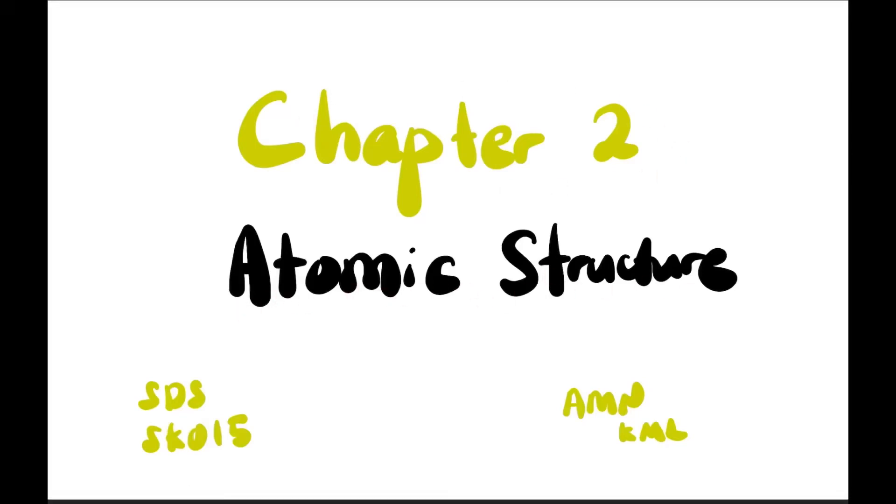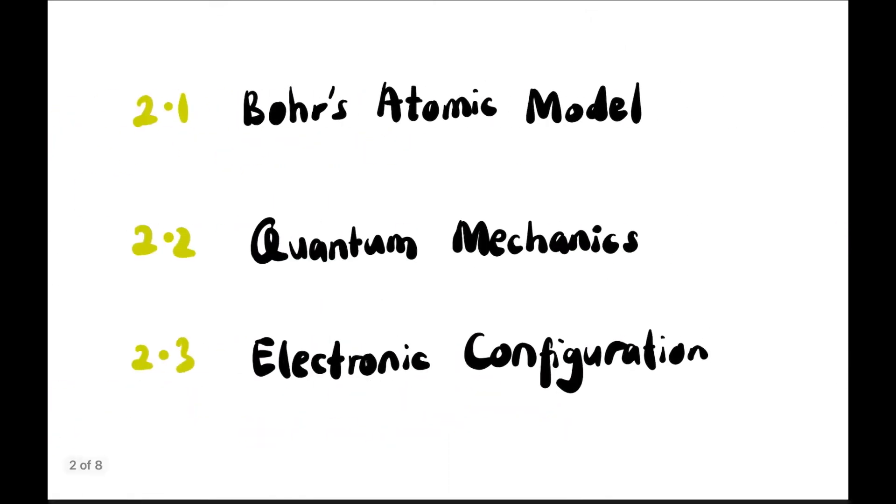Hi guys, welcome back to the channel. This is Chapter 2: Atomic Structure, SDS SK015 by MN Kamel. This chapter consists of three subtopics: 2.1 Bohr's Atomic Model, 2.2 Quantum Mechanics, and 2.3 Electronic Configuration. In this particular video we're going to focus on 2.1 Bohr's Atomic Model, and this is part one.